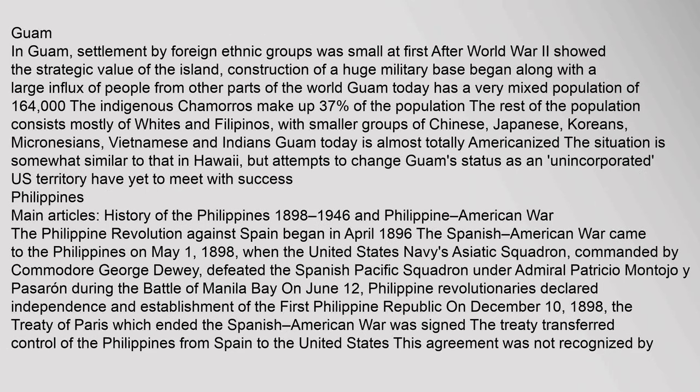Guam: Settlement by foreign ethnic groups was small at first; after World War II showed the strategic value of the island, construction of a huge military base began along with a large influx of people from other parts of the world. Guam today has a very mixed population of 164,000. The indigenous Chamorros make up 37 percent of the population; the rest consists mostly of whites and Filipinos, with smaller groups of Chinese, Japanese, Koreans, Micronesians, Vietnamese, and Indians. Guam today is almost totally Americanized, though attempts to change its status as an unincorporated U.S. territory have yet to meet with success.